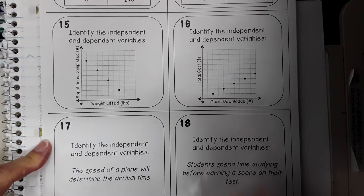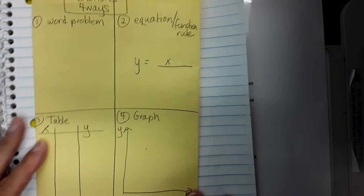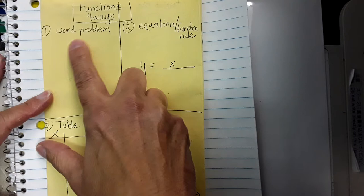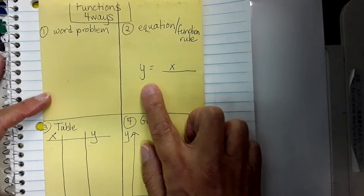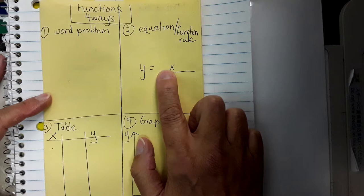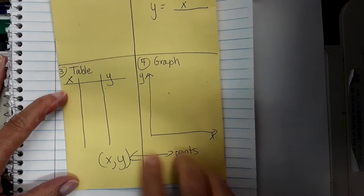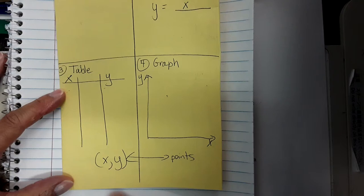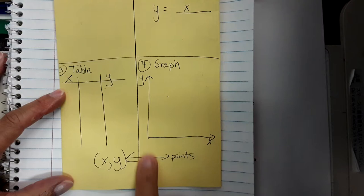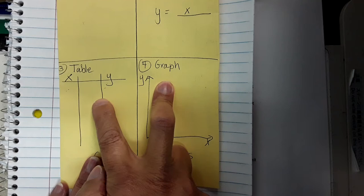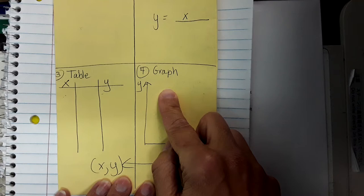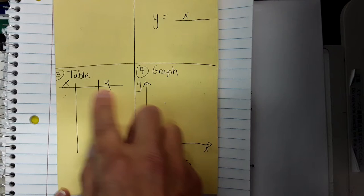So that's the first part. We also talked about the four ways we represent functions — I call it the rule of four. You can see it in a word problem or picture. We can write a function as a rule or equation, like y equals 2x plus 7, or y equals x minus 2. You can also put it in a table, an xy table. And because you can put it in a table, you can graph it. The tables and the graph go hand in hand.